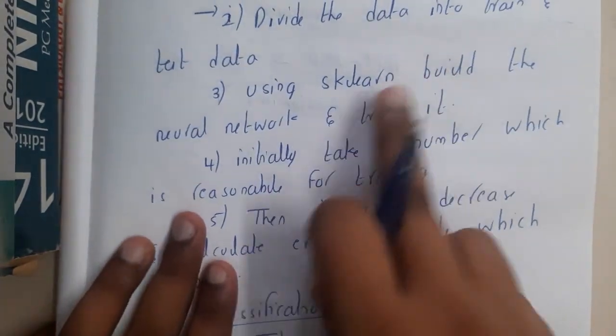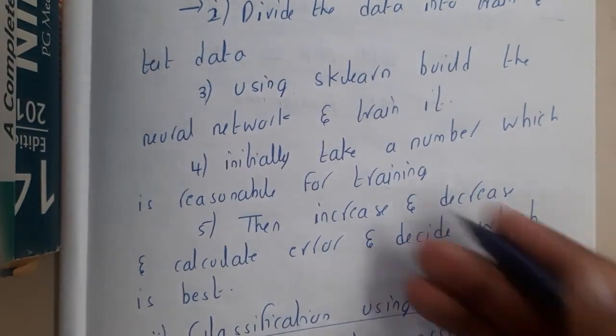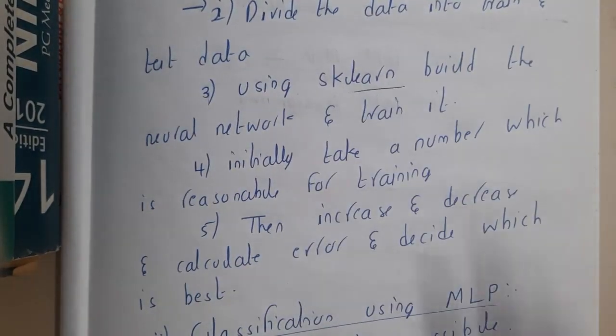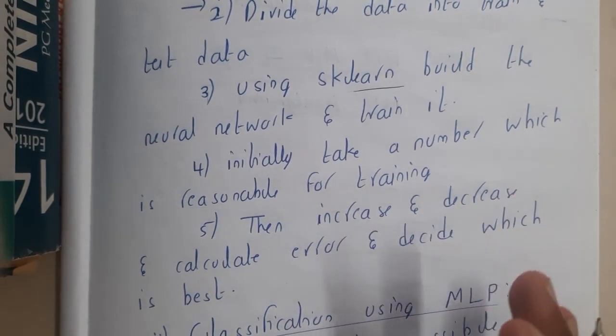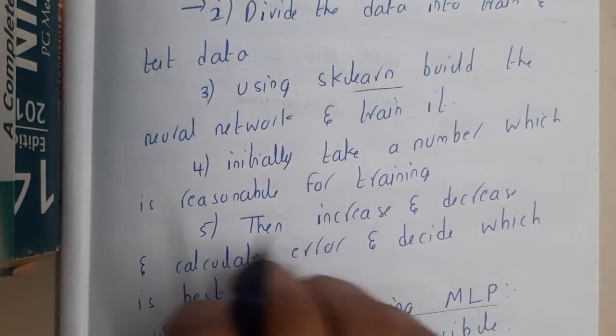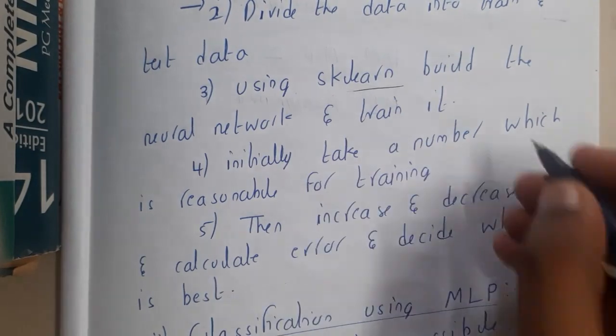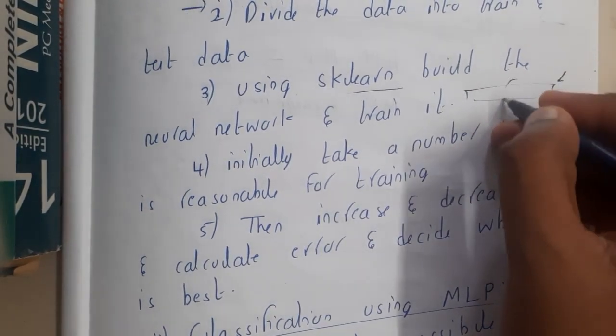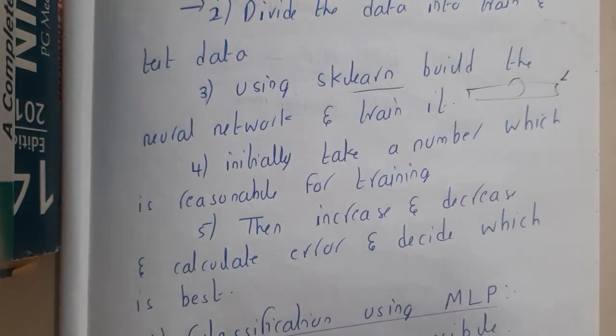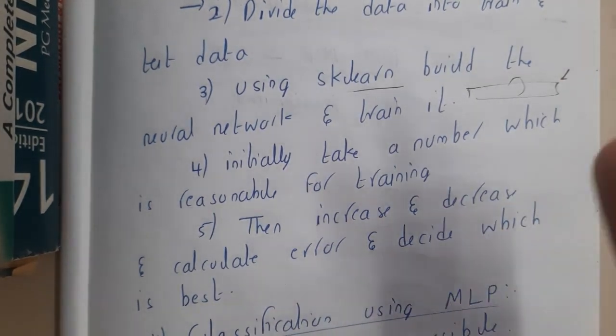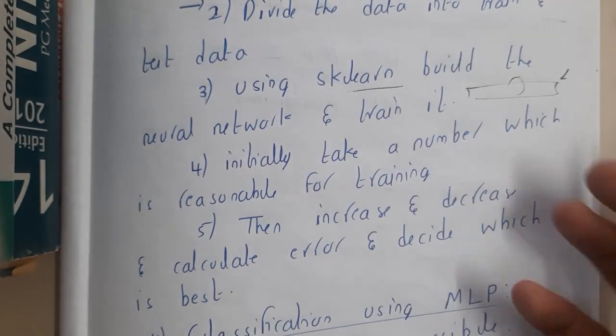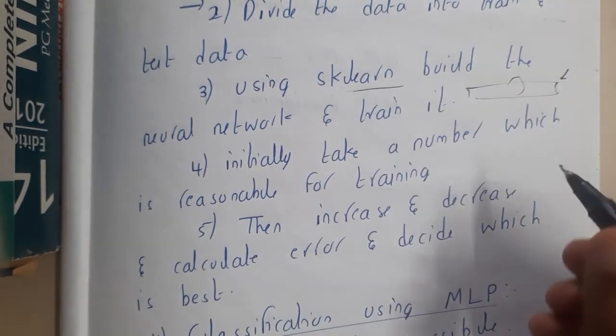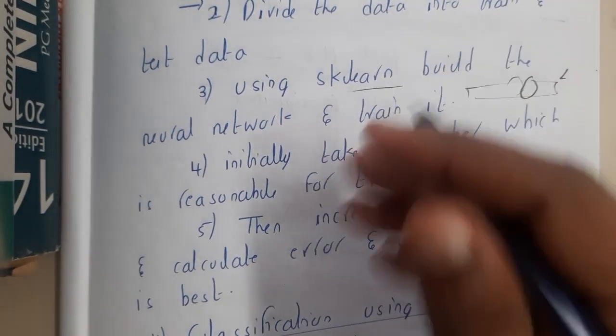Once you have divided the data, then you will be using some library like sklearn to build the neural network. Don't think that you are going to draw circles and arrows. You'll be just giving a small function where you'll be specifying which model you are going to build - either for regression or multi-layer neural network or any kind of other neural network. Based on your requirement you will be giving it and you will be specifying how many neurons you want, how many hidden layers you want.